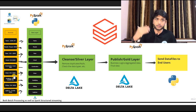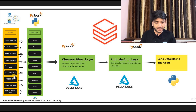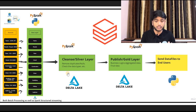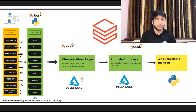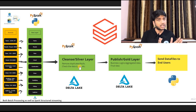On top of the raw layer — in the cleanse layer, also called the silver layer — we are doing cleaning and incremental load. In the silver layer we will also be removing duplicates, checking whether the schema is correct, validating that the data is correct, and performing other validation checks.